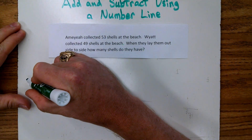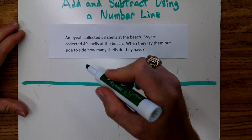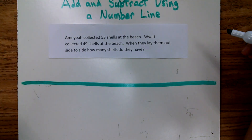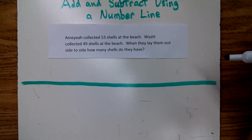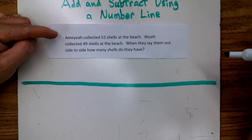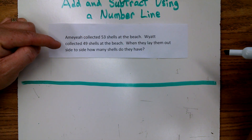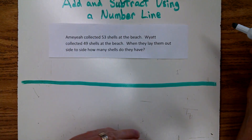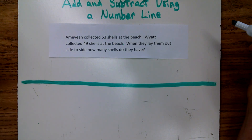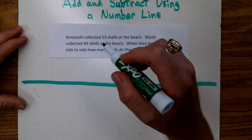For our number line, we'll start by drawing a blank line. Let's think about whether we're adding or subtracting here — just think about what the words are telling us. We know Amaya collected 53 shells and Wyatt collected 49 shells. Because they want us to put them together side by side, we know we're going to be adding.